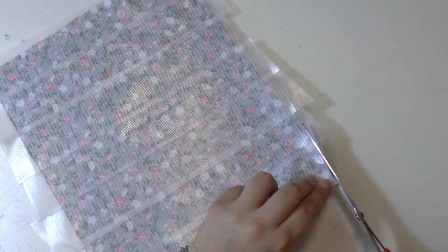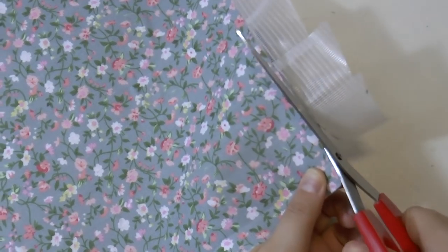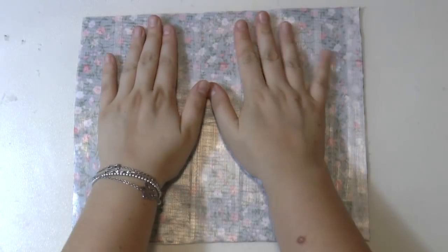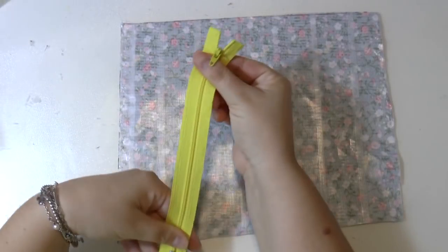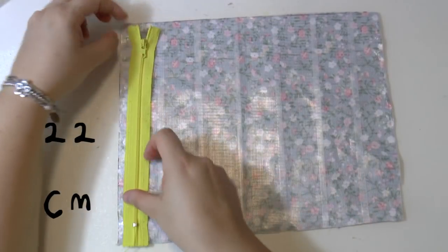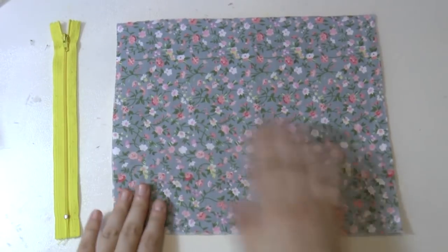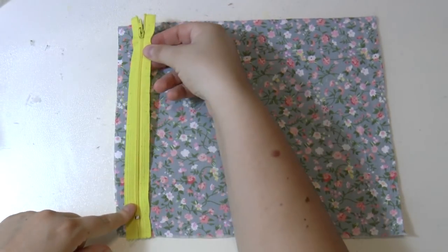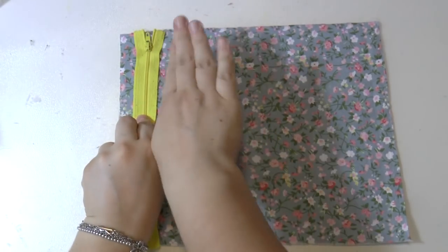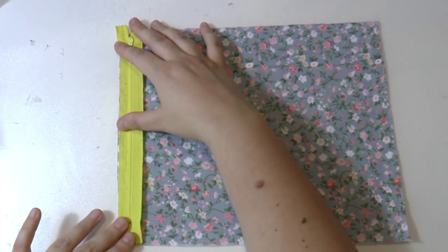So now you just want to trim the excess tape. Now take your zipper, which has to be the same measurement of the shorter side of your fabric. Then flip your fabric on the right side and flip your zipper upside down. So fabric right side, zipper upside down. That's very important.